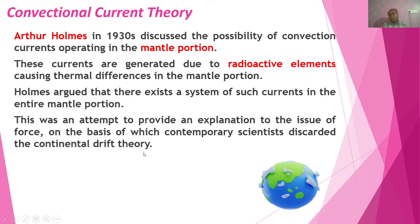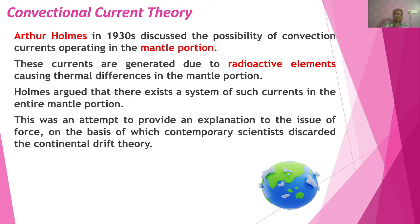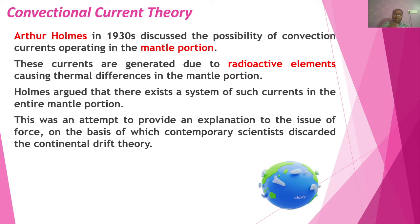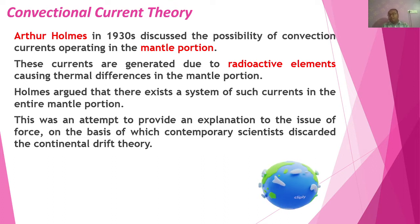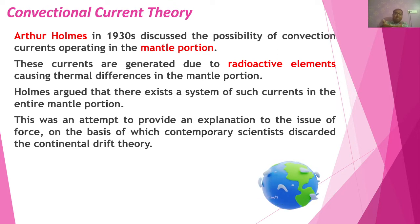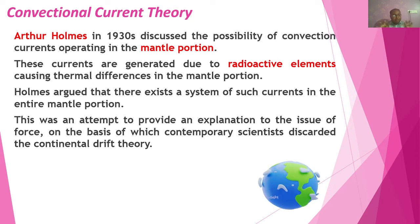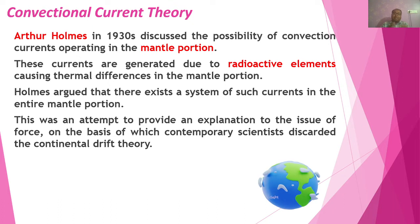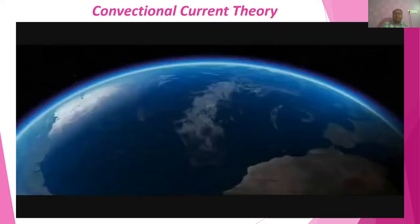This was an attempt to provide an explanation to the issues of forces on the basis of which contemporary scientists discarded the continental drift theory. Many scientists thought continental drift was not possible — how could continents move? But whenever convectional currents came into the picture, convection current supports continental drift, because drifting is only possible when there is circulation going on. For example, moving a big wooden table is very difficult without wheels. Wheels provide artificial circulation when you move the table. Similarly, circulation provides the movement of the continents.